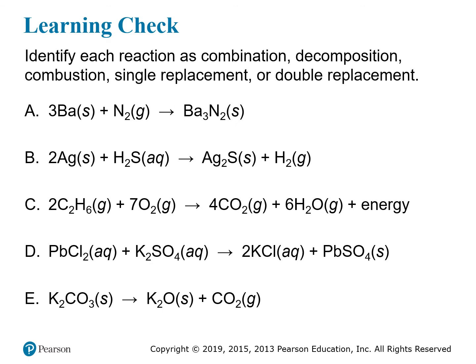Let's try more examples. Three barium ions and a nitrogen molecule react to form barium nitride — two elements forming one compound product, so this is combination. Next, two silver atoms react with hydrogen sulfide to produce silver sulfide and hydrogen gas. The sulfur was originally with hydrogen but ends up with silver, and the hydrogen is now on its own — this is a single replacement.